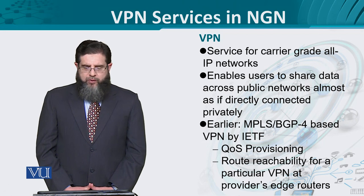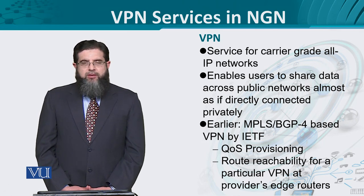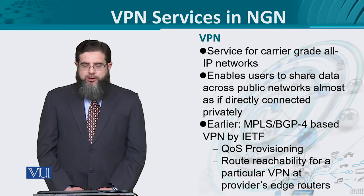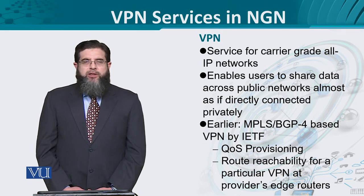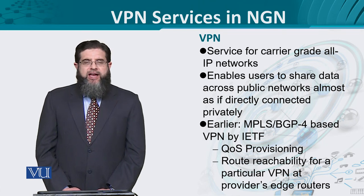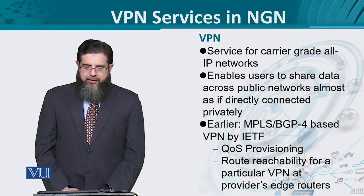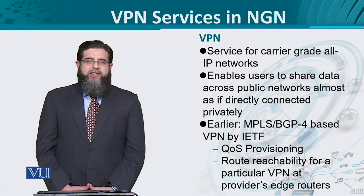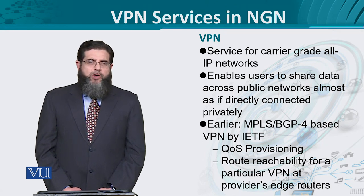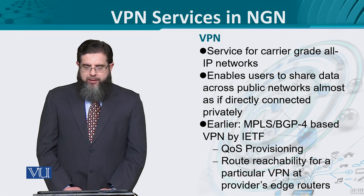Classically, when ITF defined VPN, they emphasized on two concepts: multi-protocol label switching and the border gateway protocol. Multi-protocol label switching is a mechanism through which quality of service provisioning can be ensured against best-effort traffic. QoS provisioning requires resource allocation and guaranteed service, and this is where MPLS comes in.